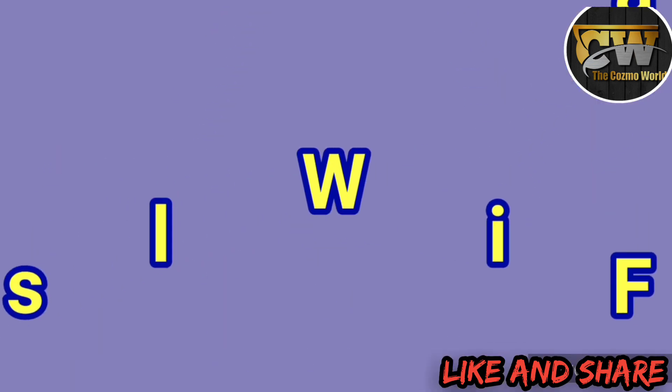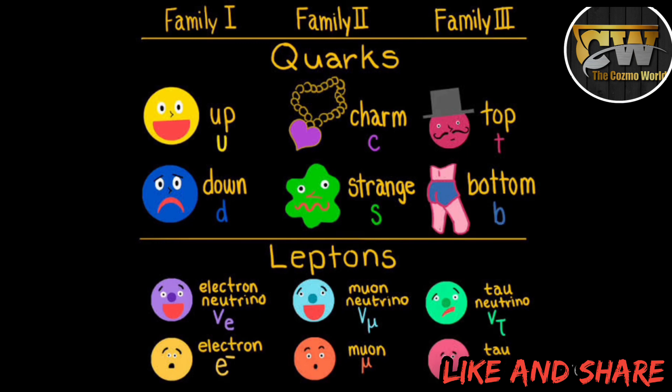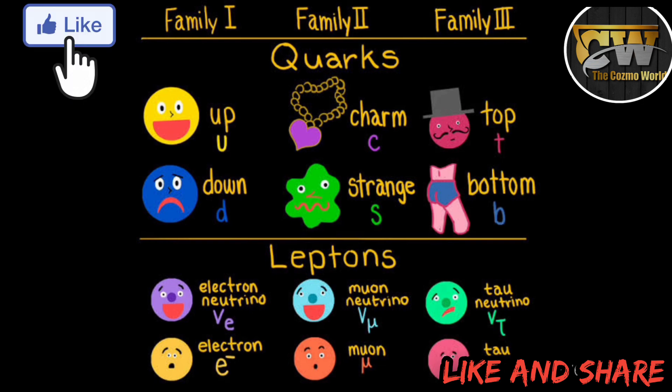Quarks are believed to be six types or flavors. Quark flavors are now called up, down, charm, strange, top and bottom.